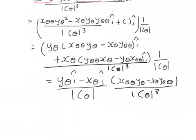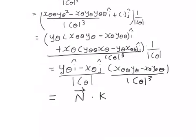As we can see from the previous video, the vector (y_θ·i − x_θ·j) is our outward normal. The scalar factor here is called the curvature of the curve. You can watch the Khan Academy videos I'm linking to get an intuitive sense of this curvature.